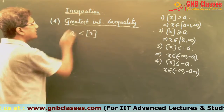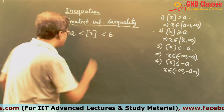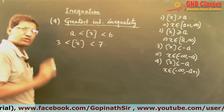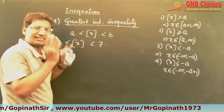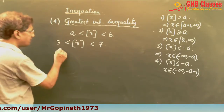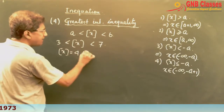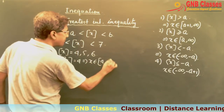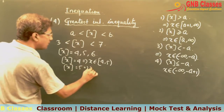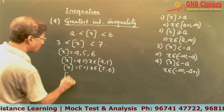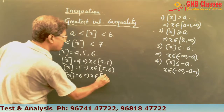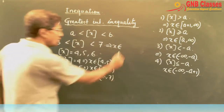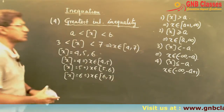Now let's take: ⌊x⌋ > 3 and ⌊x⌋ < 7. In that case, ⌊x⌋ can take values 4, 5, and 6. When ⌊x⌋ is 4, x lies between [4, 5). When ⌊x⌋ is 5, x belongs to [5, 6). When ⌊x⌋ is 6, x lies between [6, 7). So the answer in this case is x belongs to [4, 7).